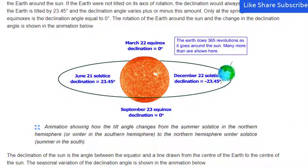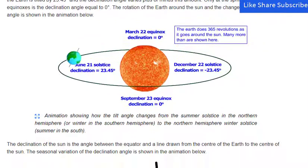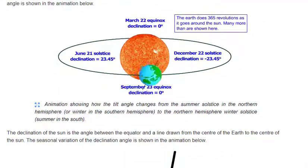Only at the spring and fall equinoxes is the declination angle equal to zero degrees. The rotation of the earth around the sun and the change in the declination angle is shown in the animation below.